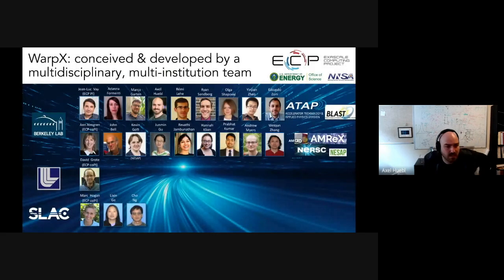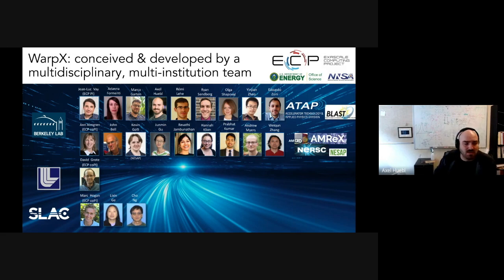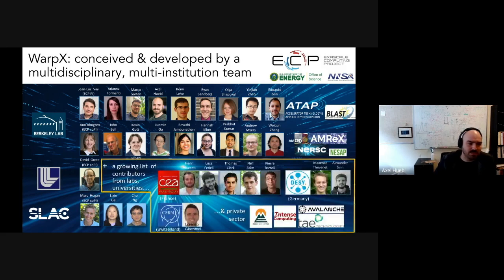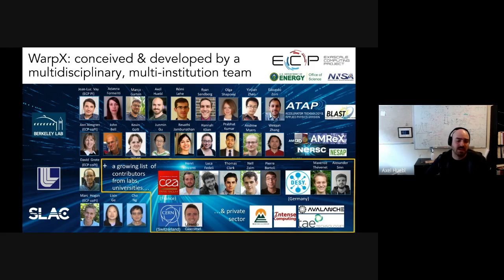We develop our codes in the open and team up with people at other divisions of the lab, other national labs like Livermore and SLAC at Stanford, international collaborators from Europe like CEA from France and CERN, and also industry partners in the fusion startup space. Three companies are using our code and contributing their developments back, which are synergistic with ours.